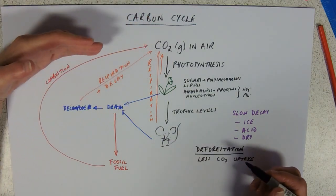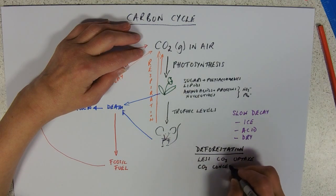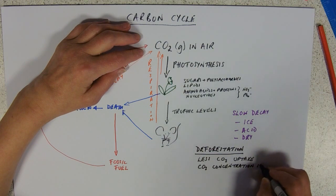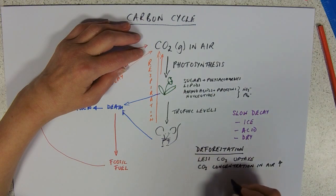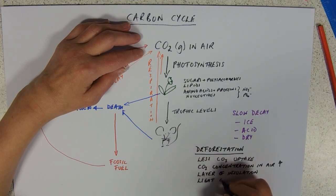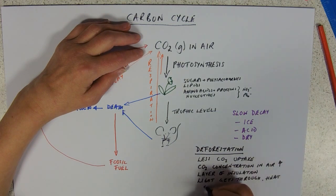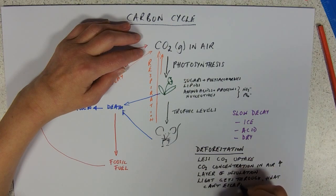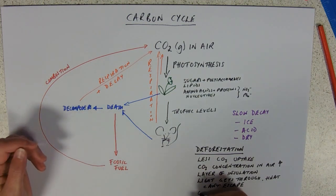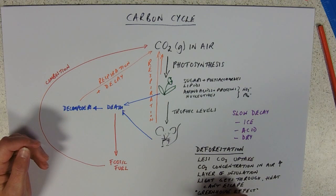Very often it's associated with combustion, returning more carbon dioxide. So the carbon dioxide concentration builds up. And if that increases, it forms a layer of insulation around the planet. So light gets through, but heat can't escape. And if heat can't escape, this is going to lead to what's called the greenhouse effect. And the ultimate consequence of that is global warming.